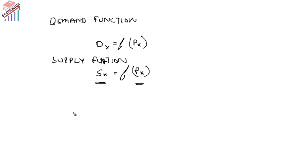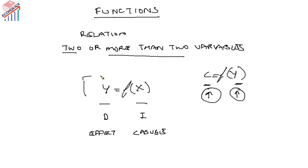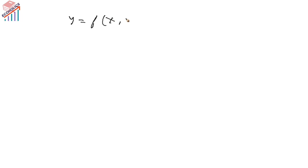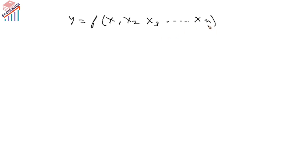If y depends on more than two variables, we write it as y = f(x1, x2, x3, ..., xn). This means y is dependent on x1, x2, x3, through xn, showing that y depends on several independent variables. Here n represents the number of independent variables. These x variables are the causes and y is the effect.